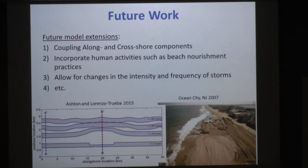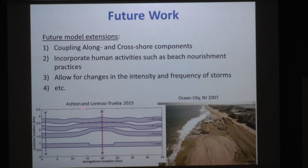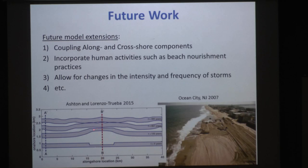Looking ahead, we are working on connecting the cross-shore and along-shore components. So far I've only discussed cross-shore dynamics, but many important along-shore processes exist. We've started exploring feedbacks between these two components. In one example showing the plan-view response of a barrier, a narrower width in the center results in faster landward migration rates there, and this rapid migration propagates along-shore later, creating undulations that we attribute to this cross-shore/along-shore coupling.